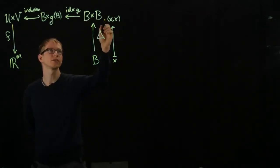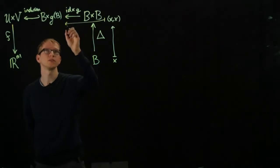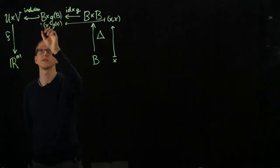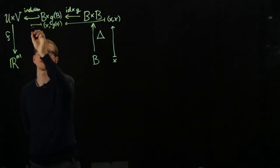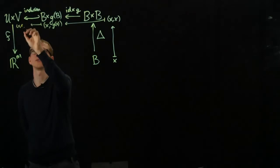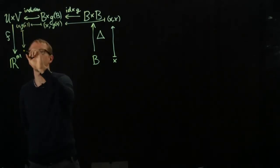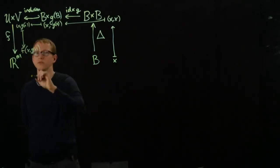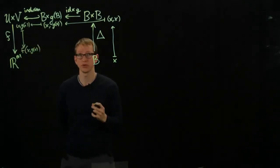So when we have this X in B, this gets sent to X comma X. This gets sent to X comma GX, and this gets sent to X comma GX again. Nothing happens under the inclusion. And then we apply the function F, and we get F of X comma GX. So this is F applied to any element on the graph of that function.